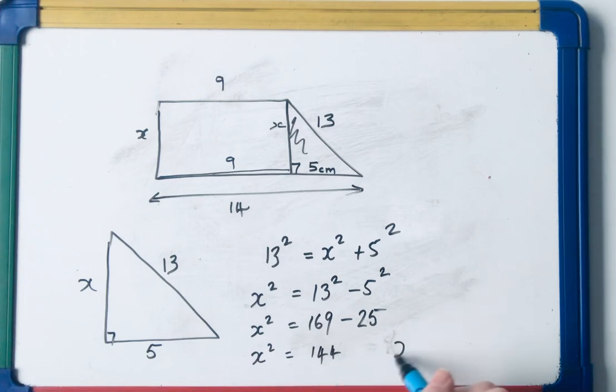Therefore, x is equal to the square root of 144. Can't be the negative because we're dealing with a triangle, so it has to be the positive 12 centimeters.